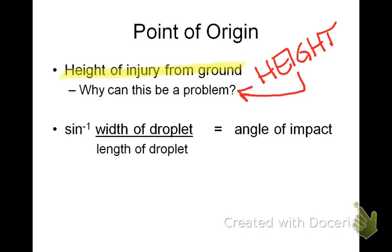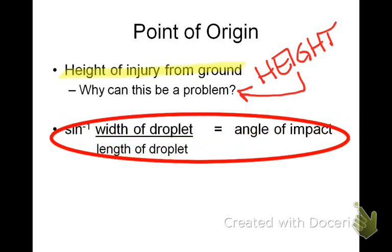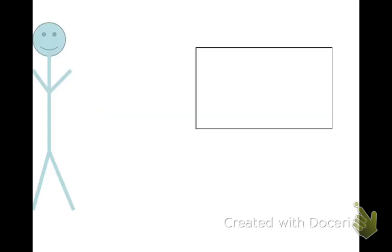This is the formula for point of origin to calculate the angle of impact: the arc sine — or sine to the minus one — of the width divided by the length of the droplet. That gives you the angle of impact. We'll work through this in class so you can see what it actually looks like on a calculator.